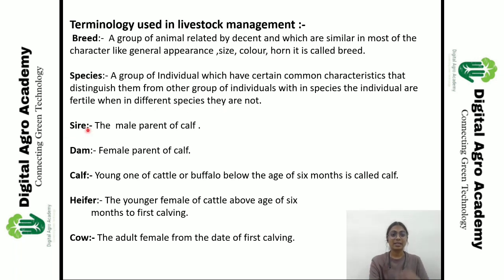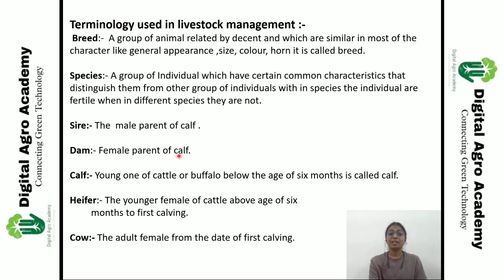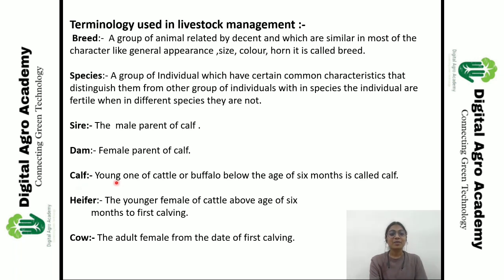There is 'sire' — sire is the male parent of a calf. Then there is 'dam' — dam is the female parent of a calf. And 'calf' — the young one of cattle or buffalo below the age of six months is called a calf.